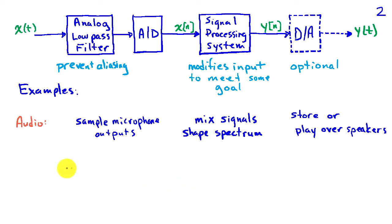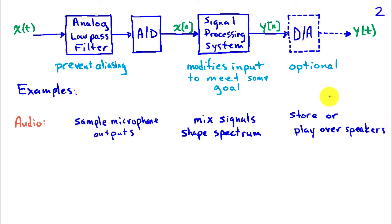Let's look at some examples. X of t could be an audio signal, in which case the A to D is sampling the output of one or more microphones. The signal processing system may be mixing the signals from different microphones, and it may also be shaping the spectrum of those signals, for example, introducing a bass boost or some other modification. We may choose to store this signal in an mp3 format. If this system is used at a concert or live event where we want to play back the processed sound, then we would be converting the output y of n back to a continuous time signal.